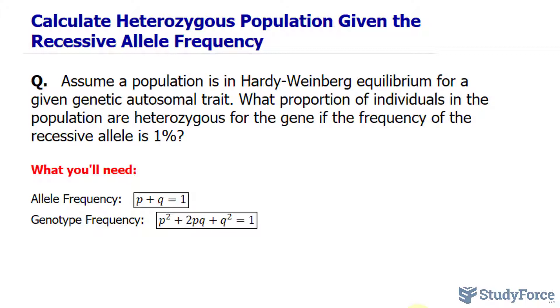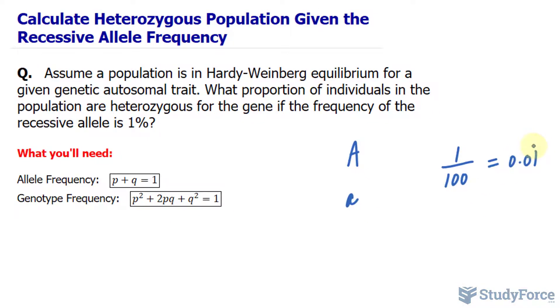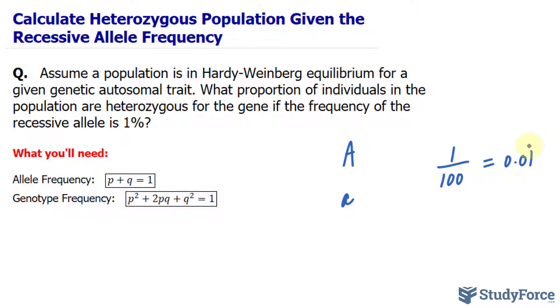First, let's give this gene a letter, and we'll represent the dominant allele of this gene as capital A, and the recessive allele of this gene as little a. We're being told in the question that 1%, which is equivalent to 1 out of 100, is recessive, which makes 0.99, or 99 out of 100, dominant.